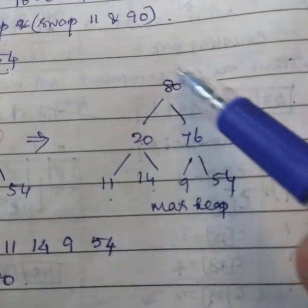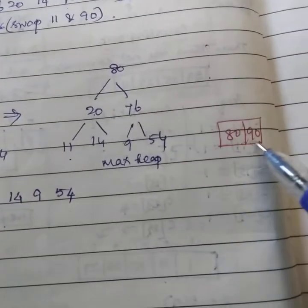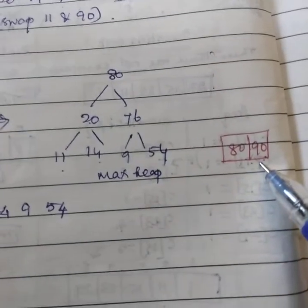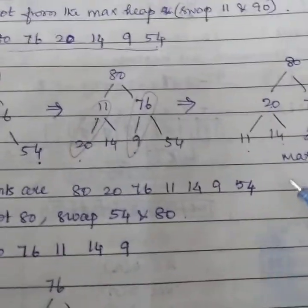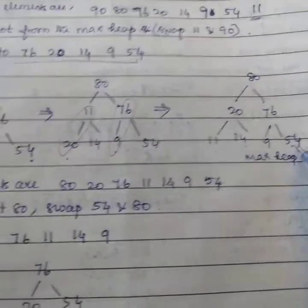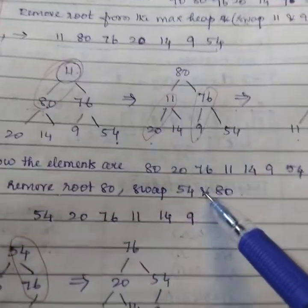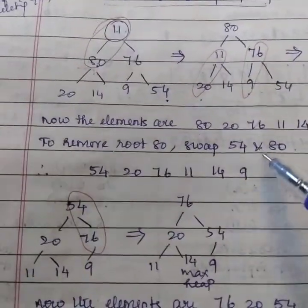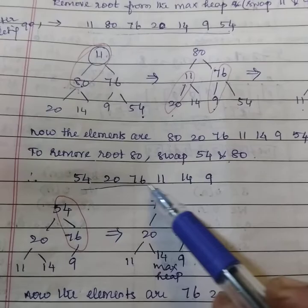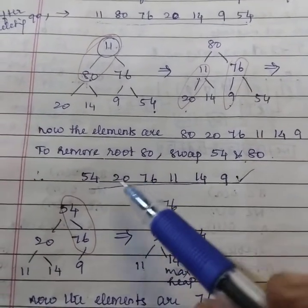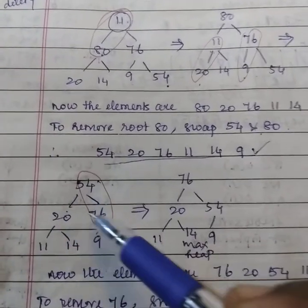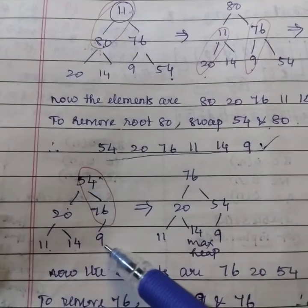So now, what we need to do? You have to remove the root and add in the sorted list. So for that, we have to interchange the last value, 54 with 80. We have to swap 54 and 80 and the value is becoming like this. So 54 is the root, 20, 76, 11, 14 and 9.